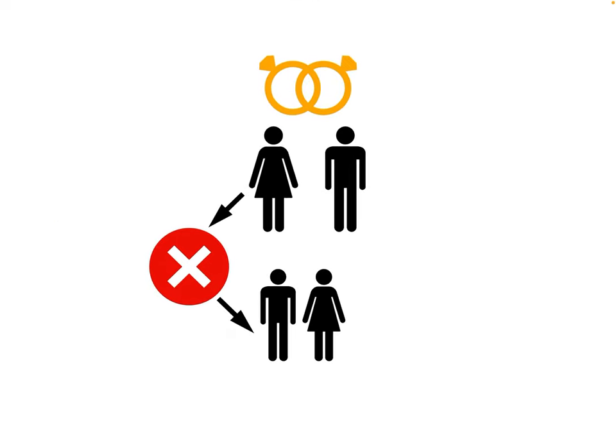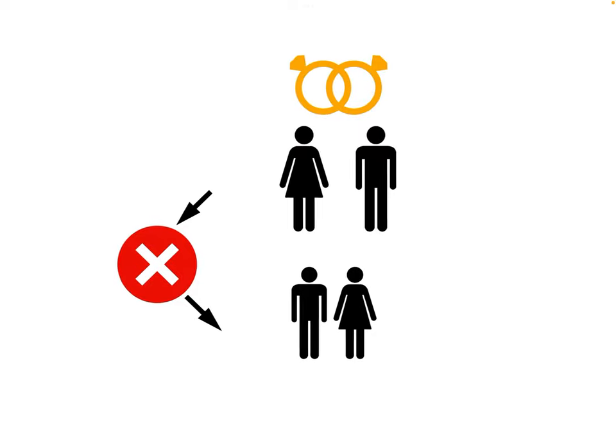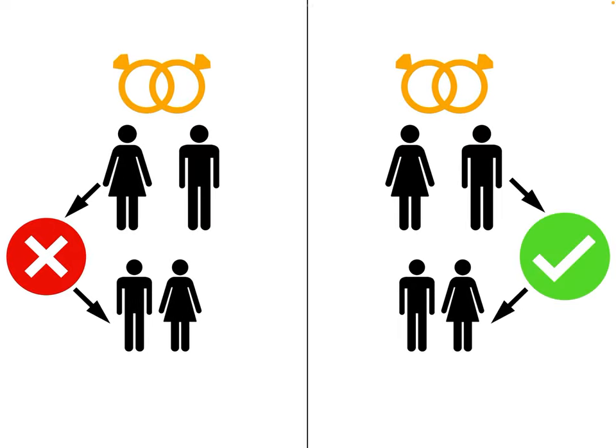Later on, the children of any women who were denied status would also lose theirs. However, an Indian man with status could marry a non-status woman and retain his status. In fact, the woman in that relationship would gain status rights, as would their children.